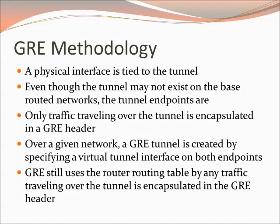When we build a GRE tunnel, we need a physical interface to be tied with the tunnel — this can be an IP address or an actual physical interface. The tunnel doesn't exist on the routed infrastructure; it's a virtual construct, but it does use the routing tables that already exist. Only traffic routed over the tunnel will be encapsulated in a GRE header; everything else is treated normally. In addition to specifying the start of the tunnel, we need to tell the tunnel where it terminates — an endpoint on the opposite side of our topology — and then do the reverse in the opposite direction.